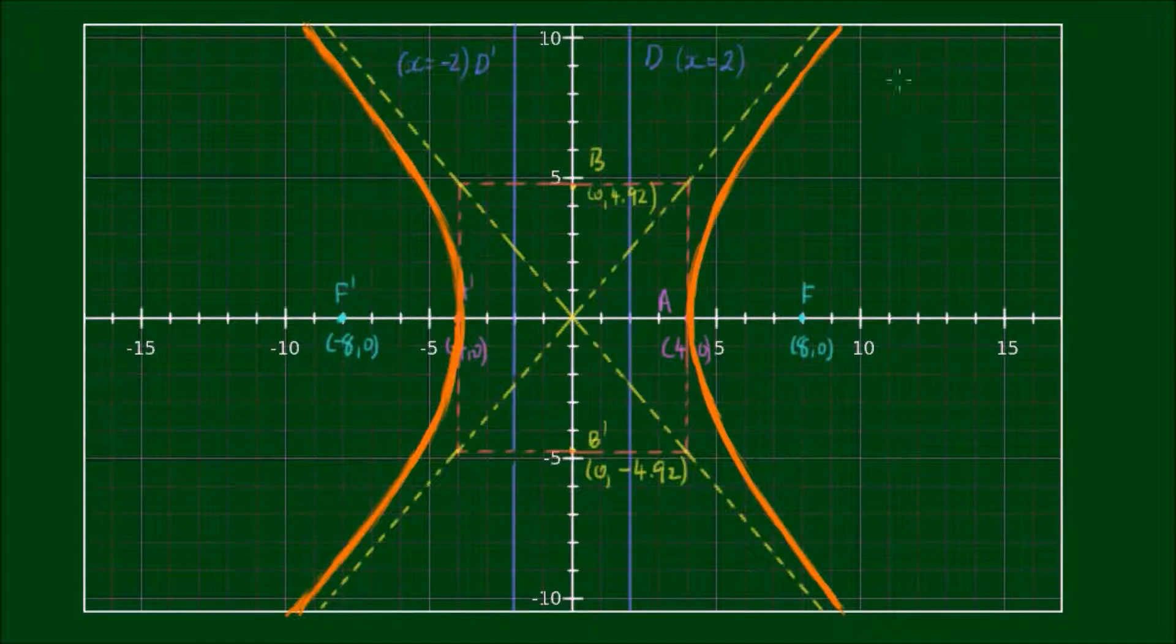Alright, so there you have it. Here is a sketch of the curve x squared on 16 minus y squared on 48 equals 1. Alright, so if I've been able to help you in this video, please give me a thumbs up. And please share it with your friends. If you have any questions, use the comments section below. And don't forget to subscribe for more videos that may help you with your homework and assignments. Till next time, best of luck with your studies.